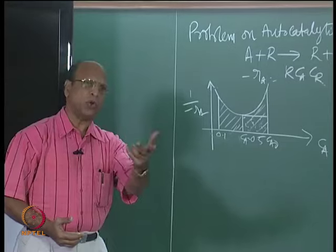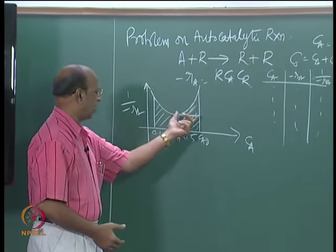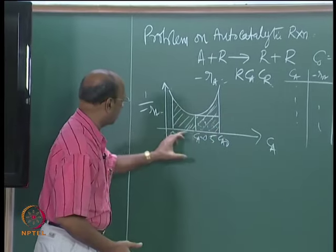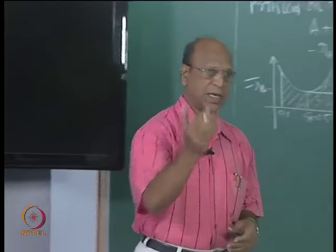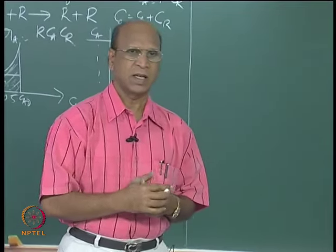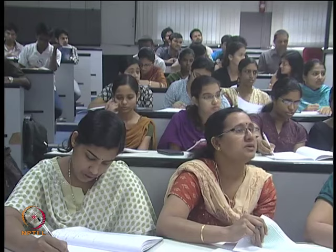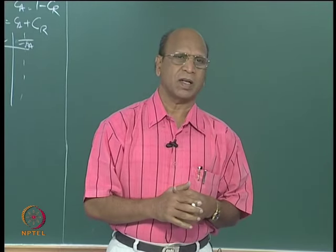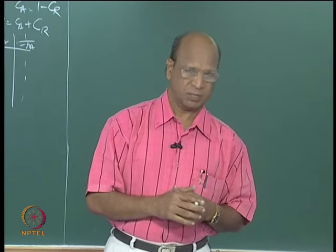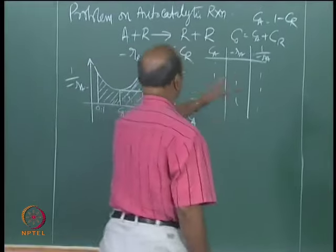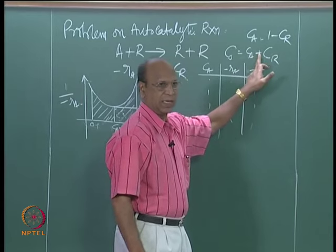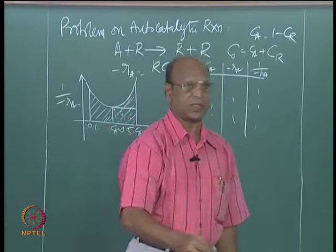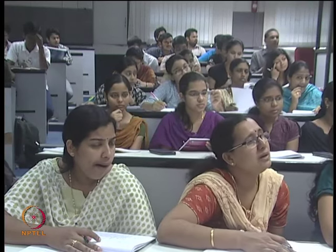As we discussed, if you need two reactors, you have MFR up to this point and then plug flow from here to here, for 90 percent conversion. For the autocatalytic case with 0.99 initial concentration, you can calculate from this equation exactly what C_A is — it may not come exactly at 0.5. If you differentiate, 0.5 will come.